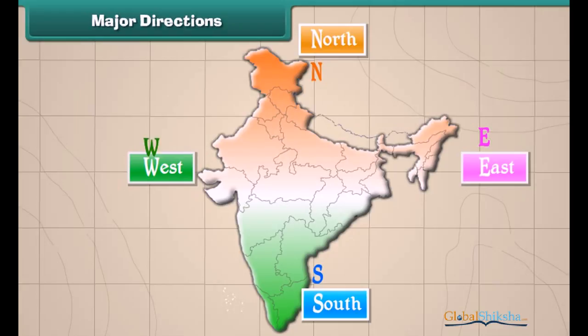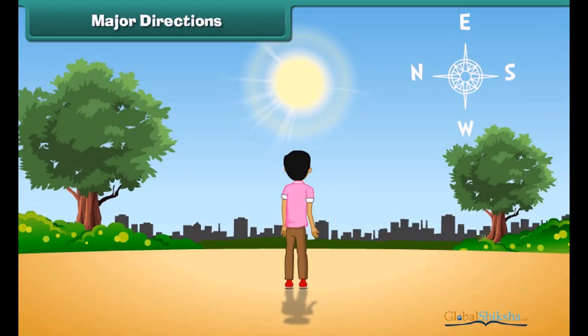They are north, east, south, and west. The four letters N, E, S, and W represent these directions.